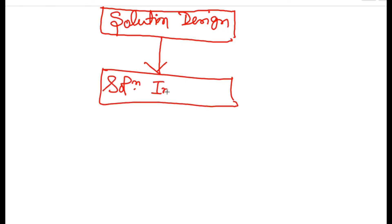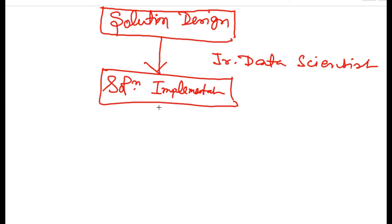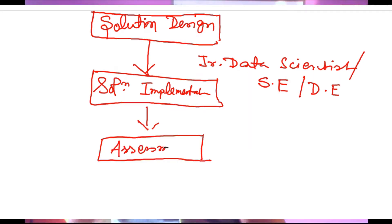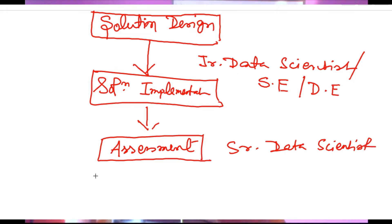Once you have designed the solution, it is passed on to the solution implementation phase, where a team of junior data scientists or software developers work to implement it. Once implemented, it goes to the assessment phase, where you will need the help of a senior data scientist to evaluate the outcome.